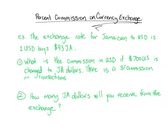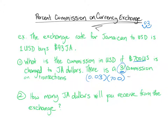The first thing we do is figure out how much money we have to pay to the bank. To take 3% of 700 we convert 3% to a decimal, which is 0.03. To change a percentage to a decimal we move the decimal point twice. So 0.03 times 700 gives us 21 US dollars.